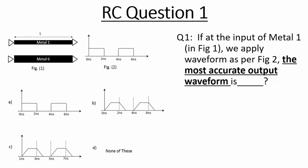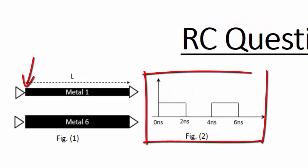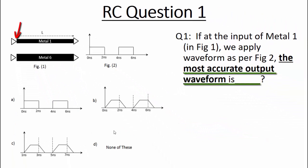Hello everyone, I have posted a question on my LinkedIn account. Now it's time to explain. The question is basically with respect to metal one. I have mentioned: if at the input of the metal one, as per figure one, we apply waveform as per figure two, the most accurate output waveform is? A lot of candidates replied but unfortunately they missed the part 'most accurate.' Now let me explain the concept.